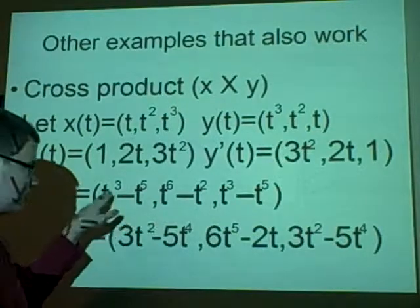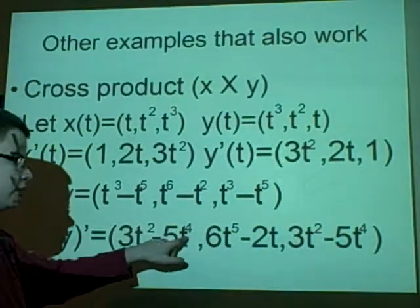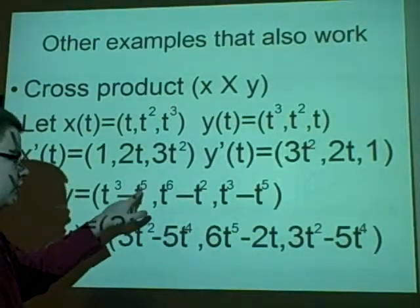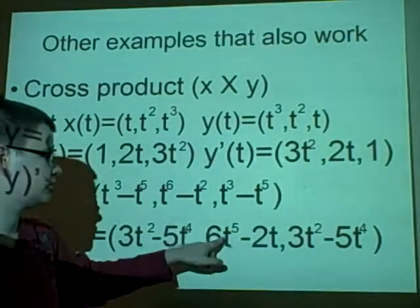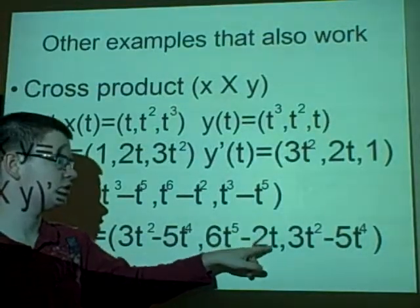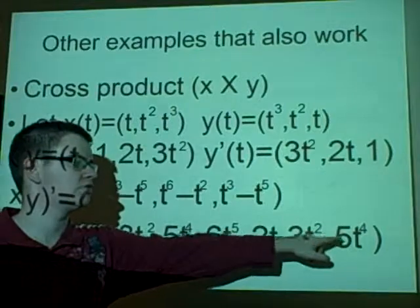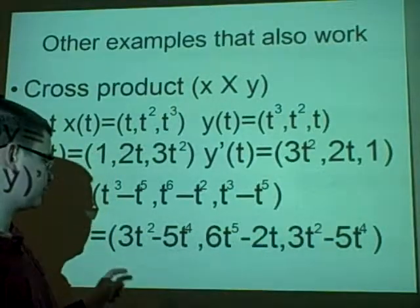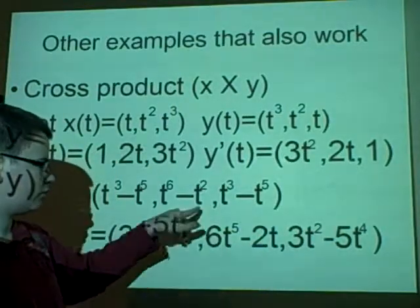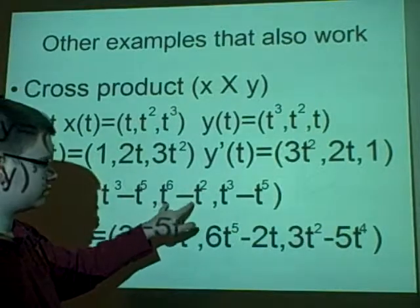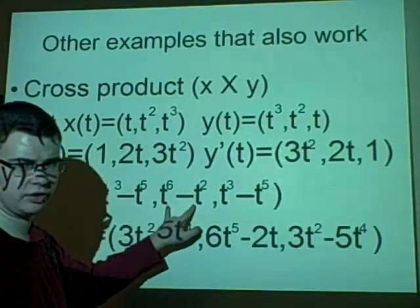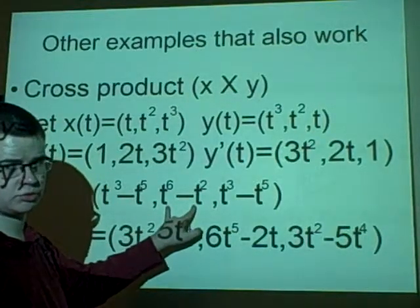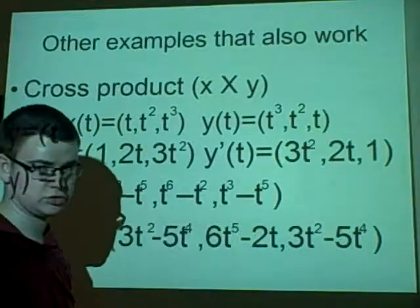Now we need to find the derivative of the cross product. So we're looking at this, we have 3t² because we have t³ here. 5t⁴ because it's t⁵. 6t⁵ - 2t, 3t² - 5t⁴. And that's the derivative. Now be careful here, as sometimes you might forget that you have to subtract the second one, and it's just adding the first and last.